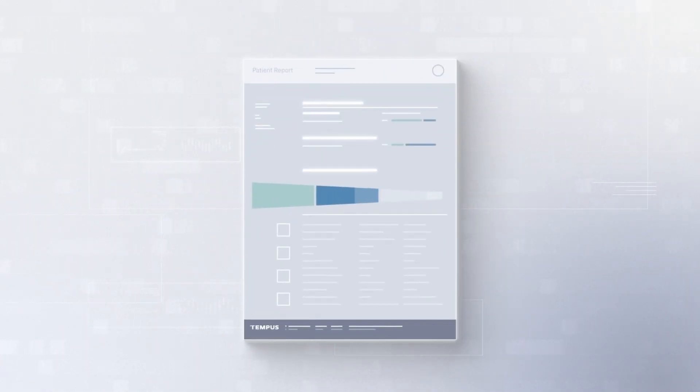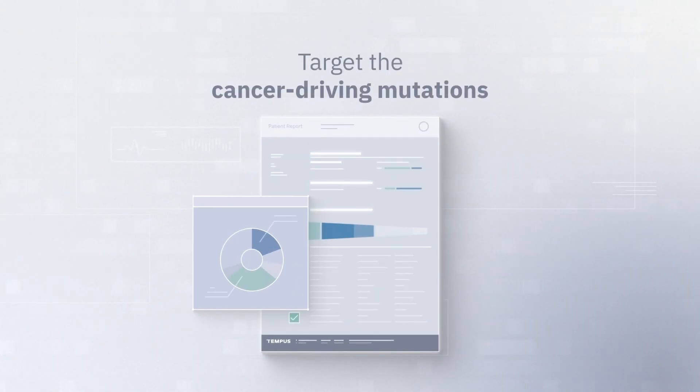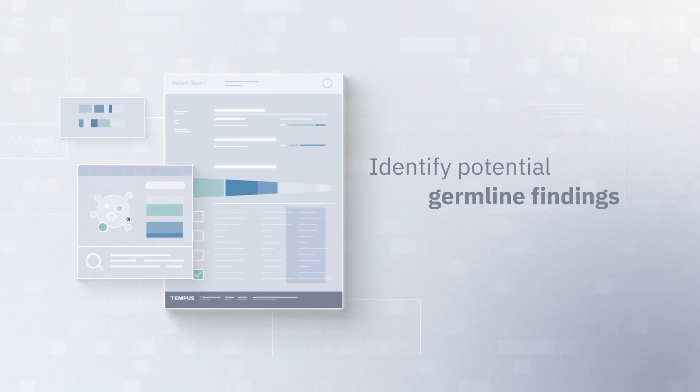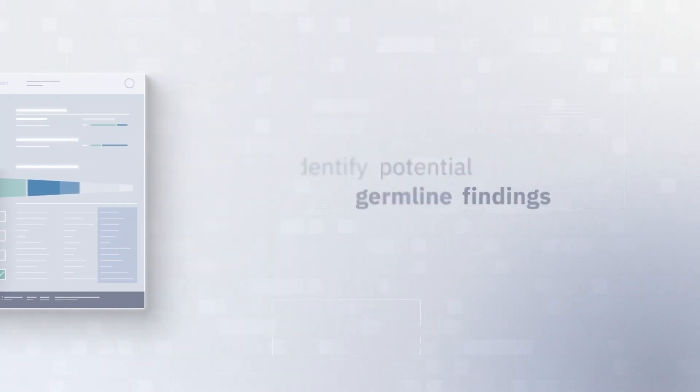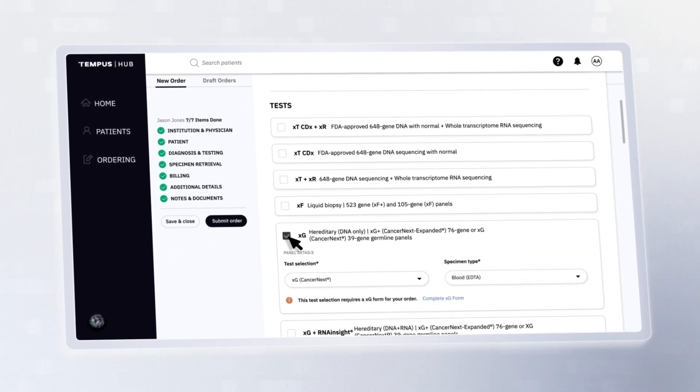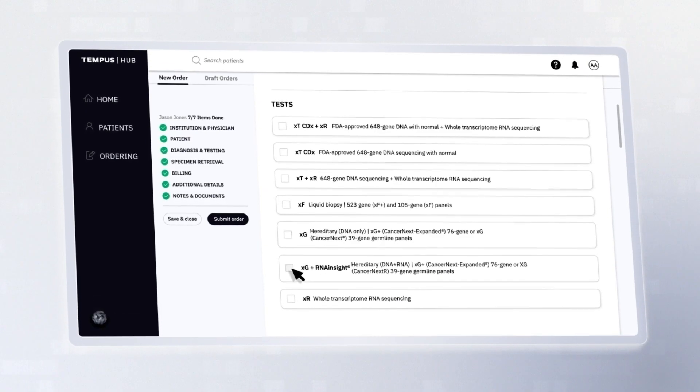You can use this information to more precisely target the cancer-driving mutations and identify potential germline findings, revealing vital information for both patients and their family. Confirmatory germline testing can then be recommended and is offered within our platform.